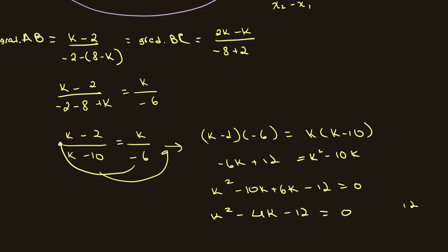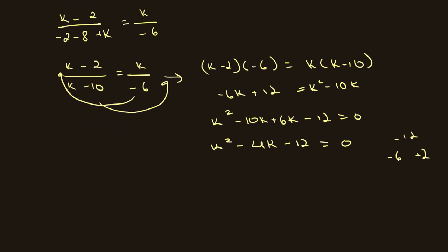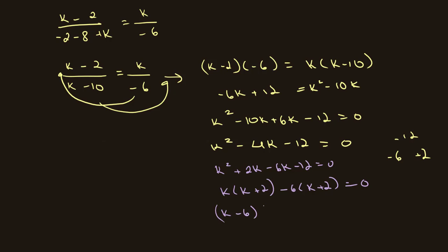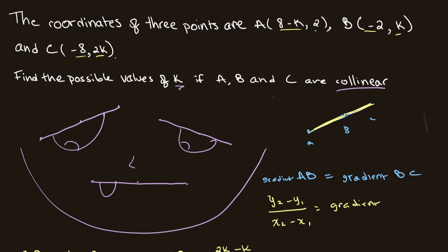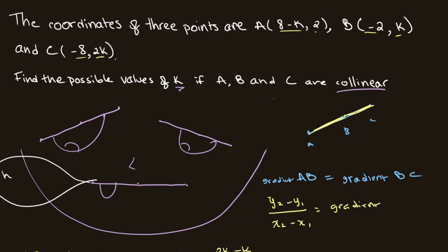We factorize k squared minus 4k minus 12. From minus 12 we can use minus 6 and plus 2, giving (k minus 6)(k plus 2) equals 0. From this we get that either k equals 6 or k equals negative 2. So our final answer is k equals 6 or k equals negative 2.